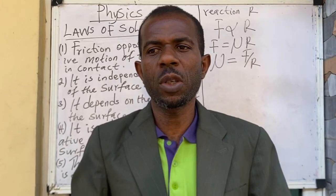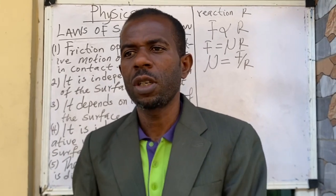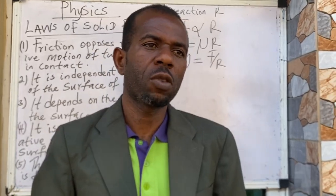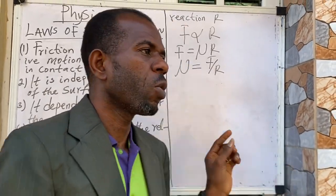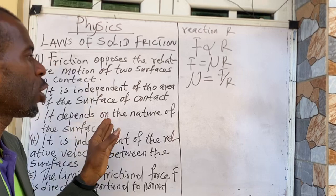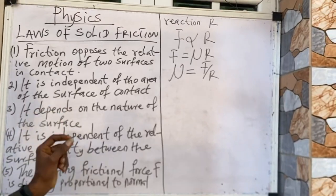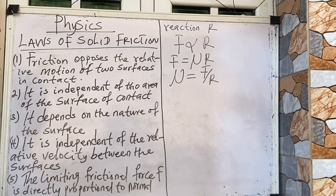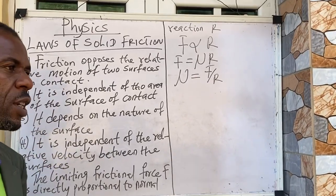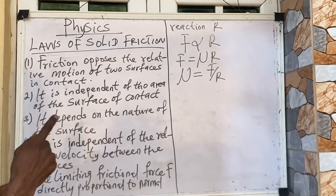If the body is very smooth, the friction will be very limited. That is why we say that the friction depends on the roughness of the body.